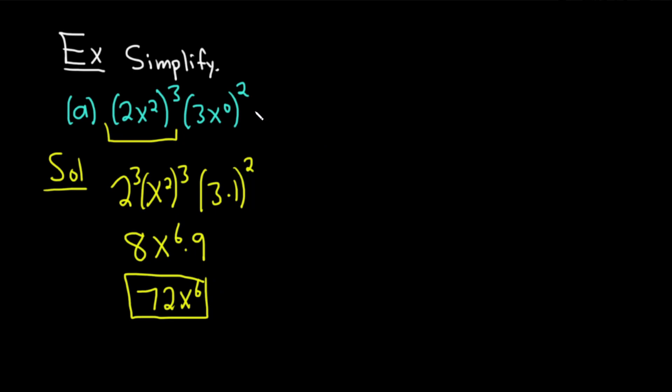Alright, so I would do this problem as follows. I would say this is equal to, you square the 2, so you get 8. You square the x squared, but we know we can multiply. So 3 times 2 is 6, so you get x to the 6th. x to the 0 is 1, so it doesn't really matter, because 3 times 1 is 3. 3 squared is 9. So you get 72, x to the 6th. So how much work you show is really dependent on what you want to show, but now you see two different ways of approaching the same problem. Let's do another one.